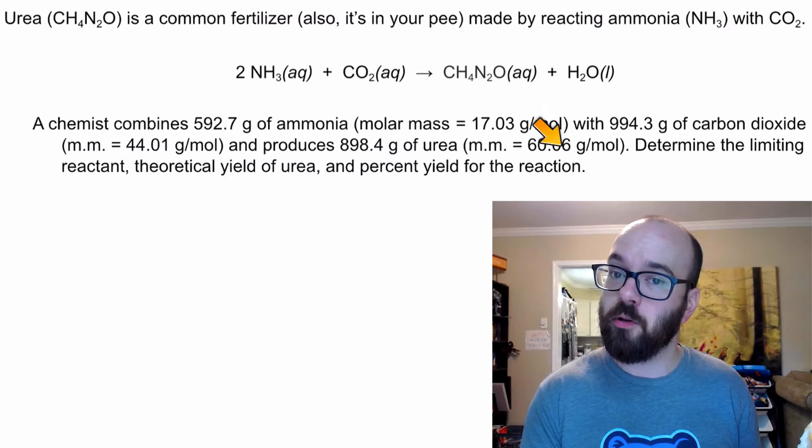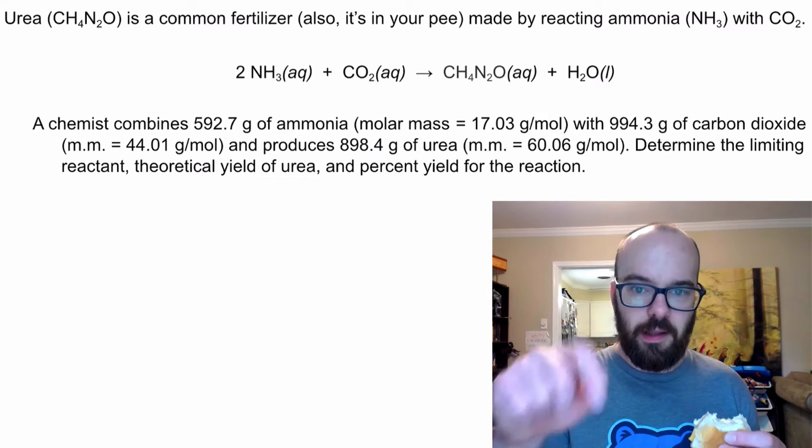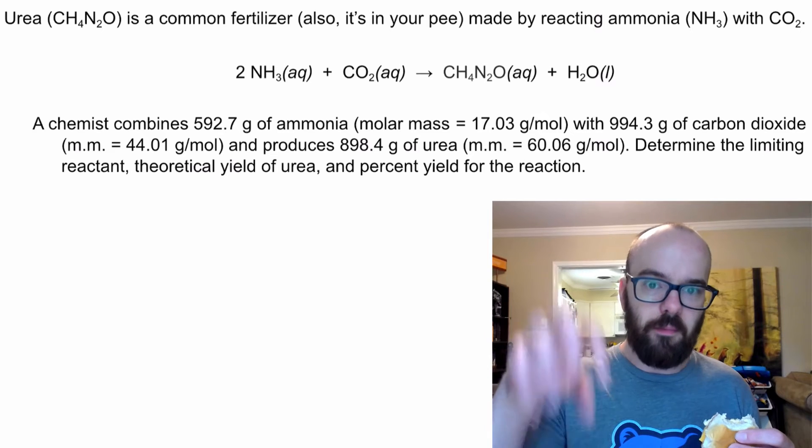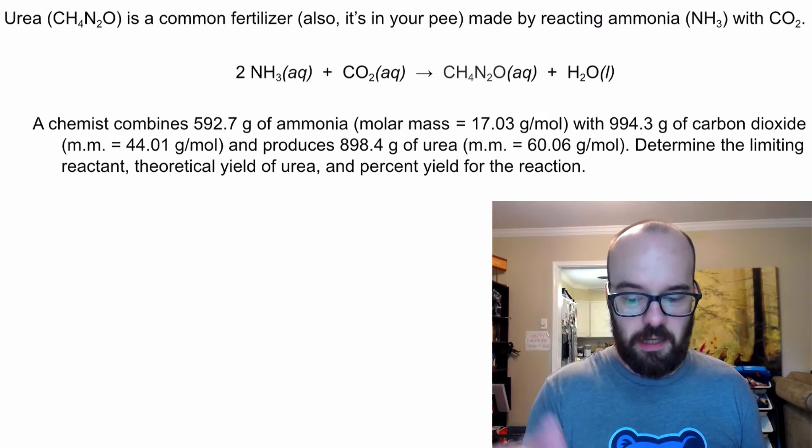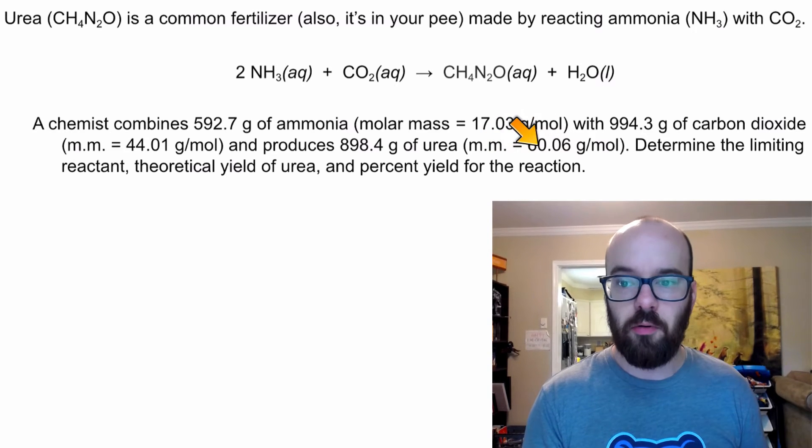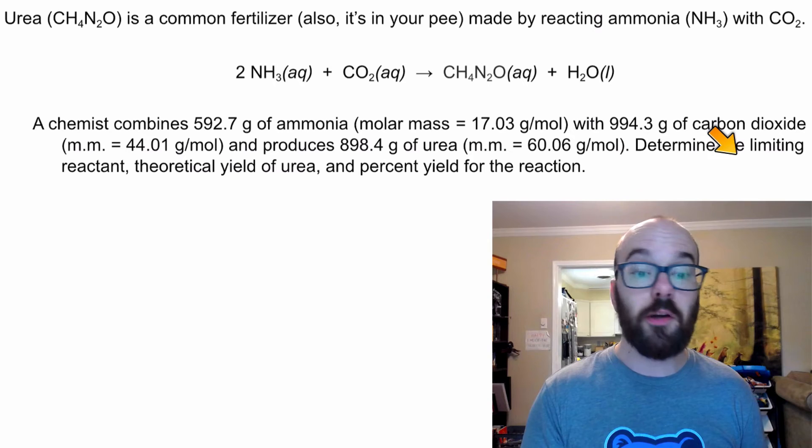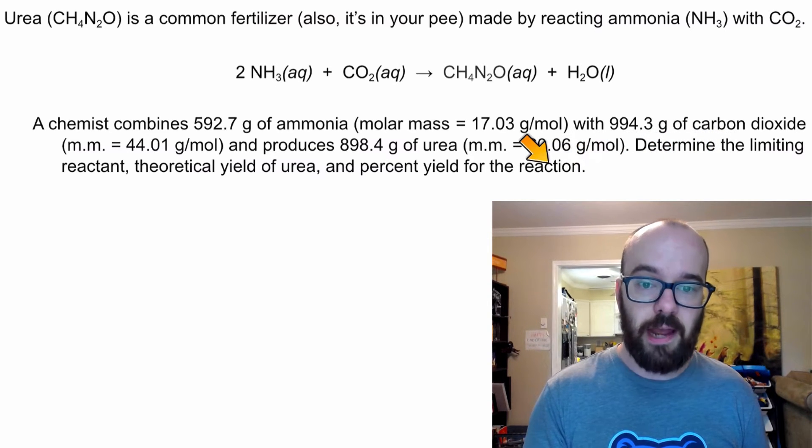I love when they give us the molar mass in the problem. The AP chemistry test usually gives you the molar mass. That's because they don't want you to spend time trying to add up each atom's molar mass and combine them all. They assume that you know how to do that. Determine the limiting reactant, theoretical yield of urea, and percent yield for the reaction.